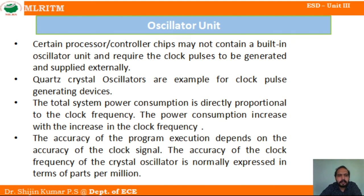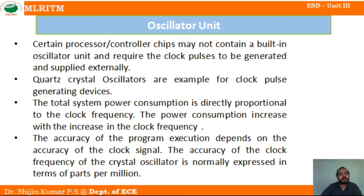To summarize: the oscillator unit is the main part of a microprocessor; without it, clocks will not be generated. There are two types of oscillator connections — built-in inside the chip or provided externally. Accuracy is expressed in parts per million, power consumption is high when frequency is high, and the major crystal used for clock generation is the quartz crystal.